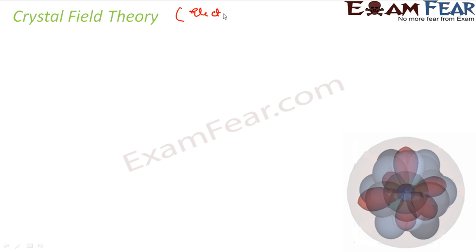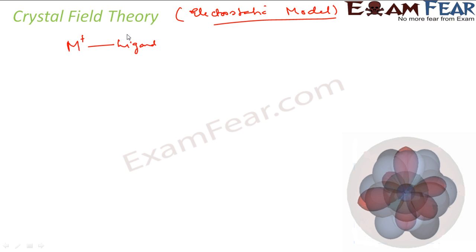So let's start with crystal field theory. Crystal field theory is also called the electrostatic model. It has some limitations, but it is better than valence bond theory — you don't have to rely on experimental data here. It is assumed that the metal has a positive charge and the ligand has a negative or neutral charge, and there is bonding between the metal and ligand.